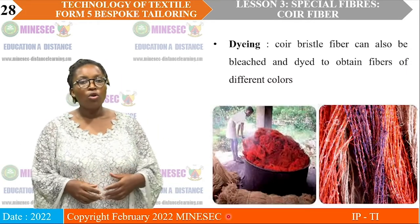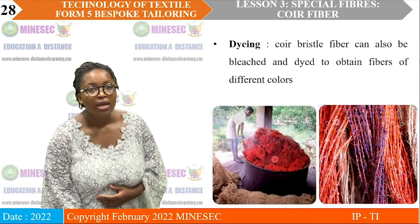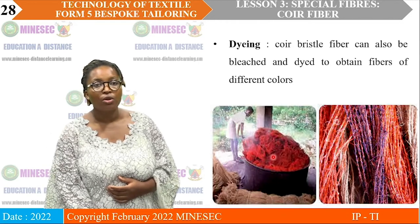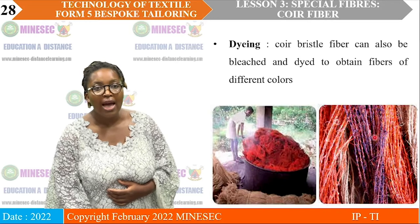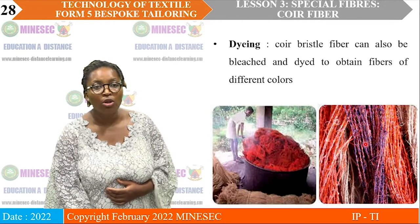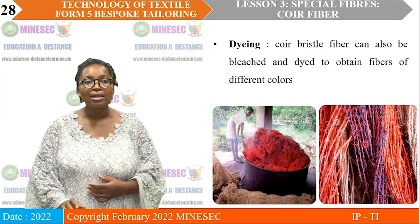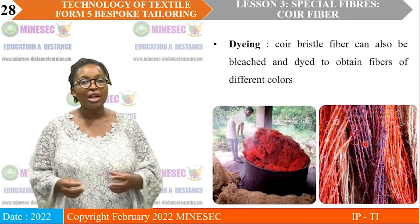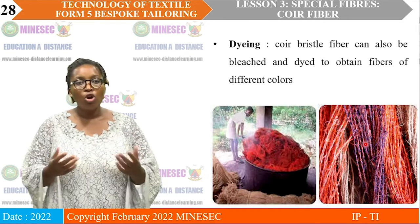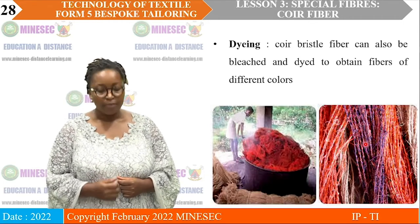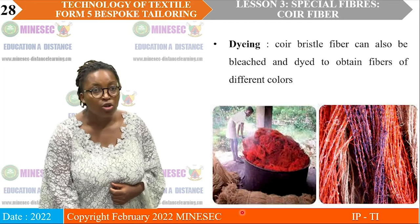Dyeing: you can add color to the fiber. Here color has been added at the fiber stage — before spinning. Here it is at the yarn stage — they have already spun and we have our cords, then color is added. So after everything is extracted and processed, you can choose to add color to your fiber. Coconut fiber can be dyed.